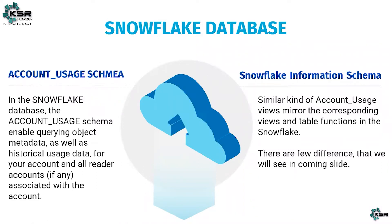Similarly to account_usage at the account level, any database you create in Snowflake will automatically have two schemas generated: an information schema and a public schema. Public schema is for creating your objects; information schema is for storing metadata about your schema. There is a slight difference between account_usage, which is at the account level, and information schema, which is at the schema level. Let's see what those differences are in the next slide.